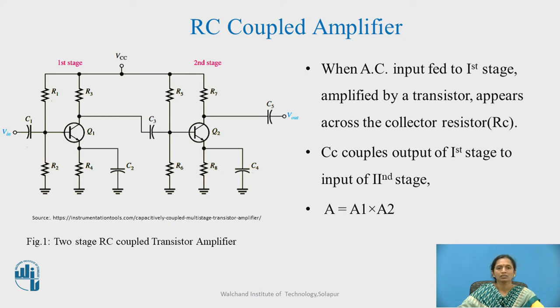I can say the overall gain is equal to voltage gain of first stage into voltage gain of second stage. But as I told you before, due to shunting effect, there will be loss of the gain and therefore, it will be practically less than the multiplication of 2 voltage gains.